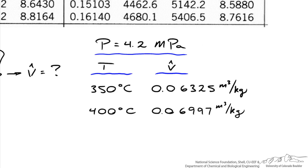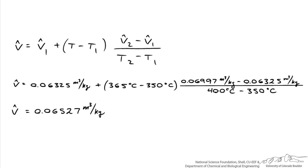So there's one more interpolation that we need to do, and that is to figure out the specific volume at a temperature of 365 degrees C. So here's the formula for interpolating that. We've got the two specific volumes now that we calculated in the other two interpolations. And we're going to input the temperature we're interested in at 365 degrees C. And completing the calculation, the final value for the specific volume is 0.06527 cubic meters per kilogram. And this is evaluated at a pressure of 4.2 megapascal and a temperature of 365 degrees C.